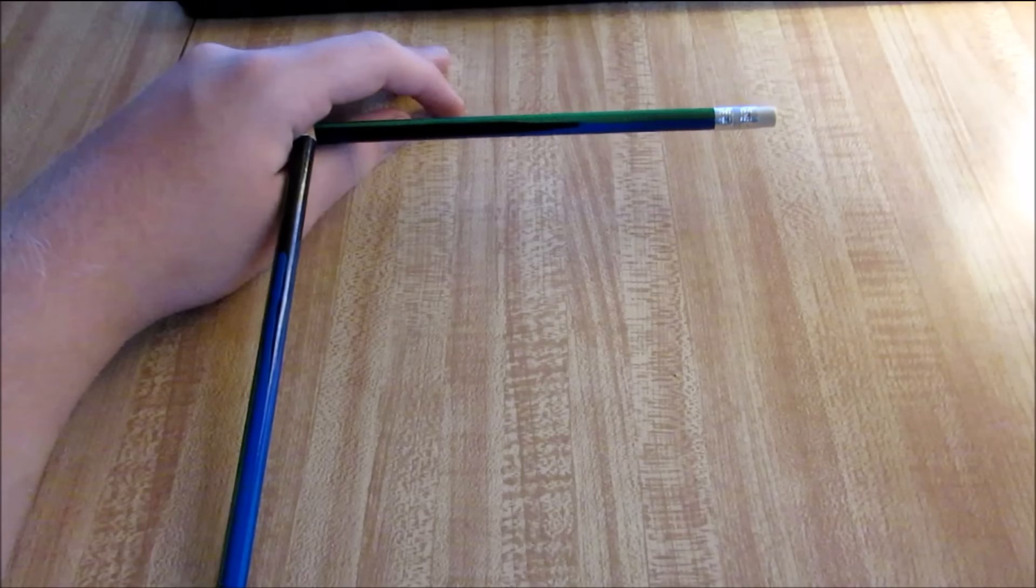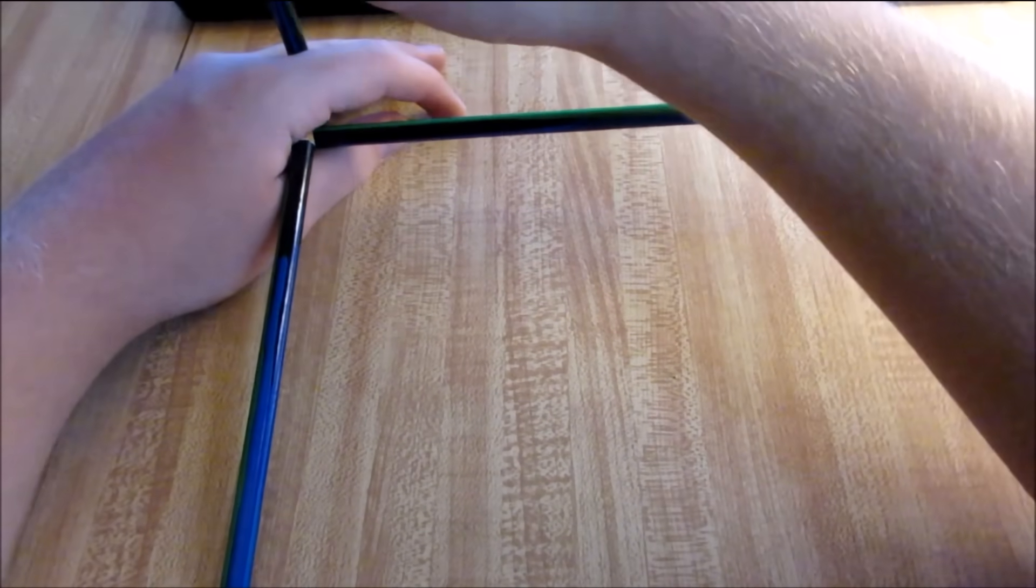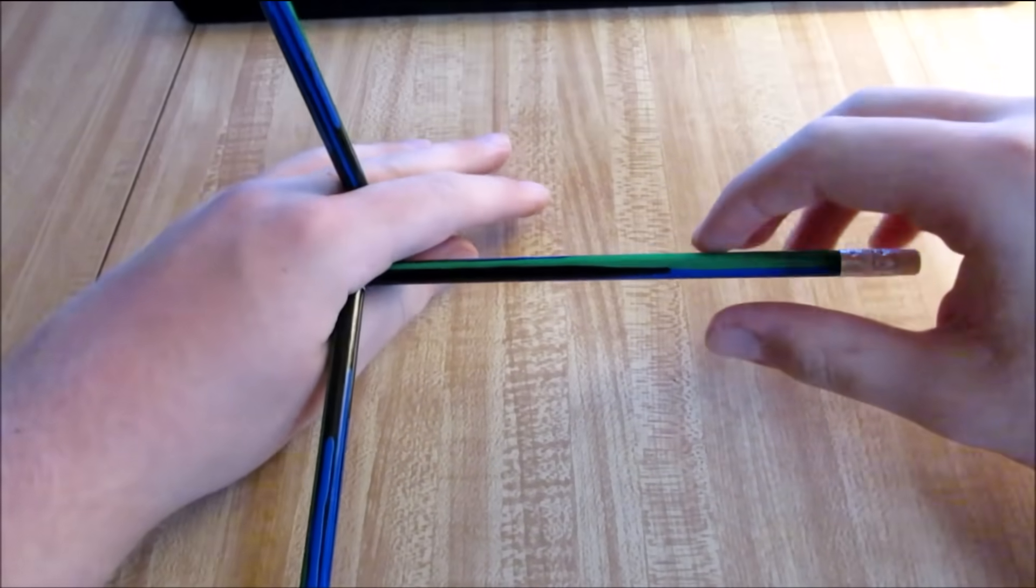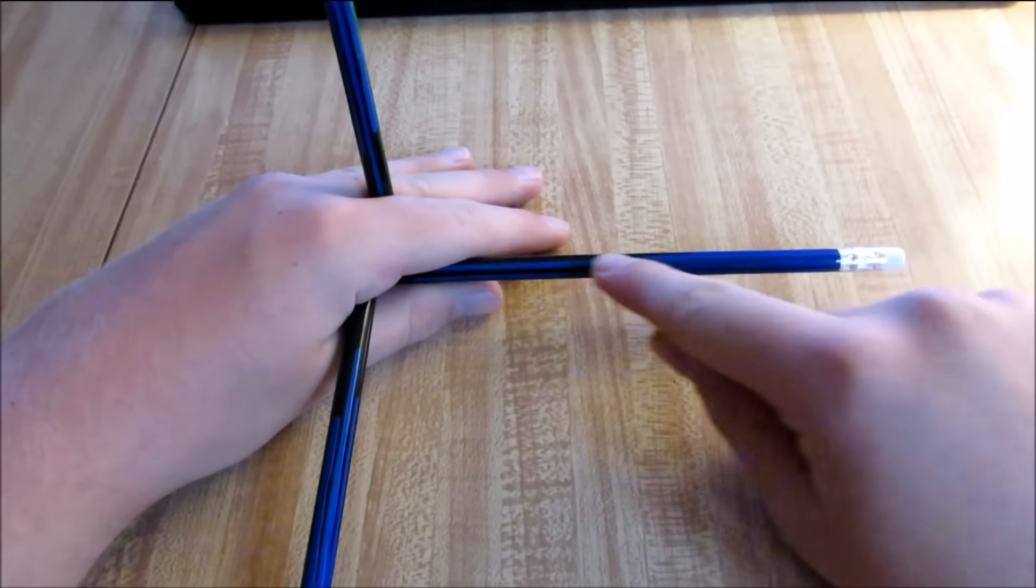We hear it all the time, that our world is three-dimensional. It makes sense after all, we can only define up to three directions, each at a right angle to each other, that don't interact with each other.